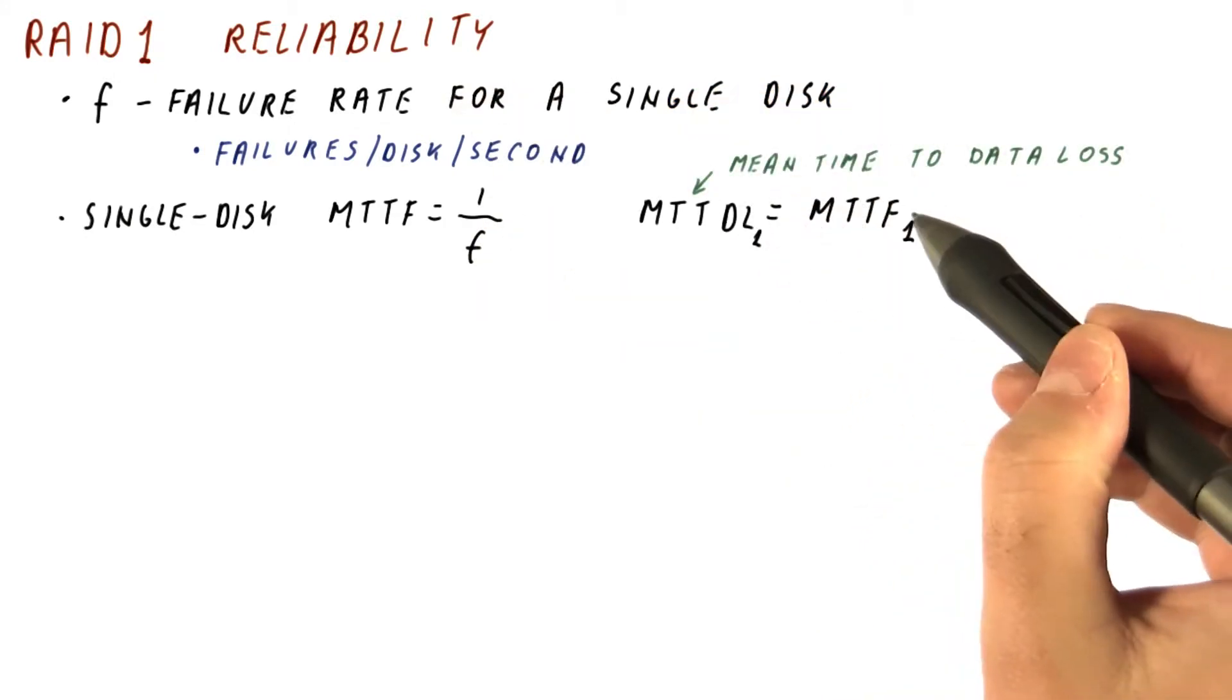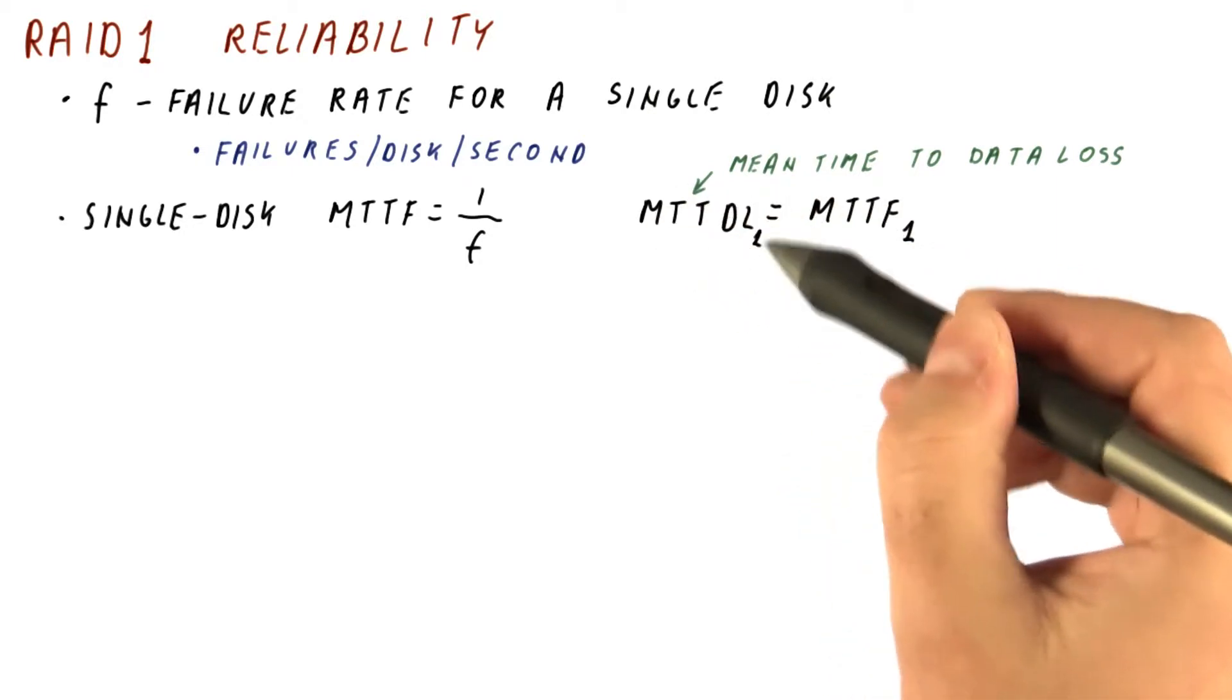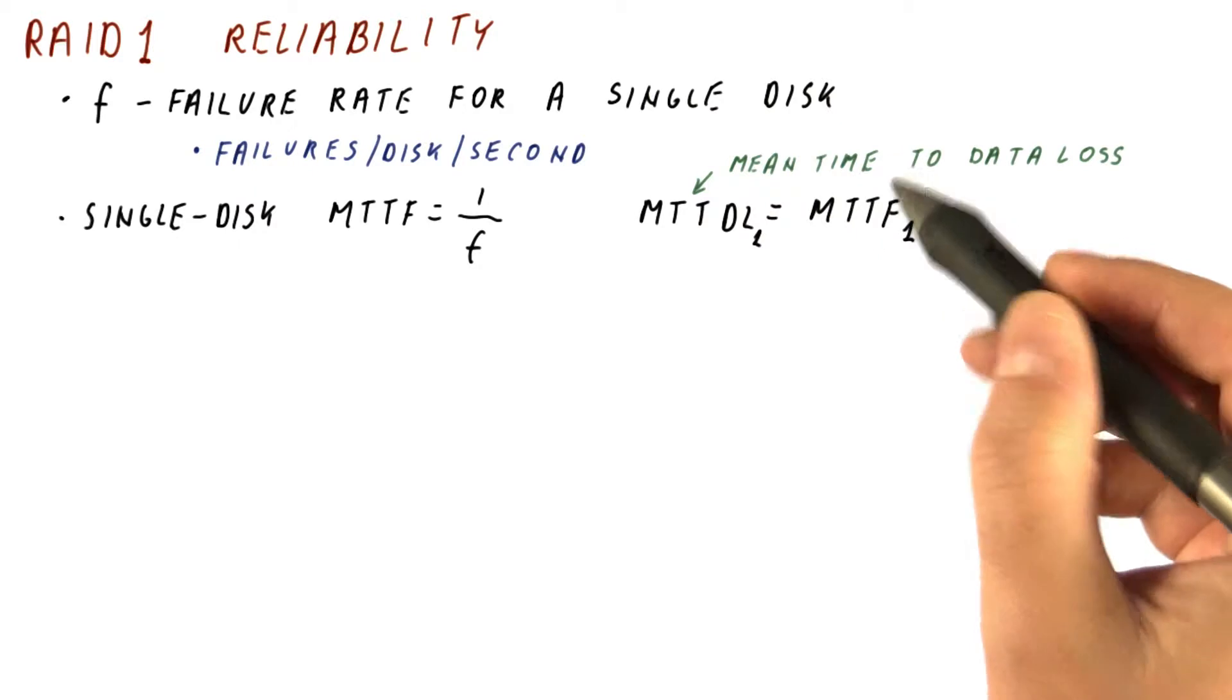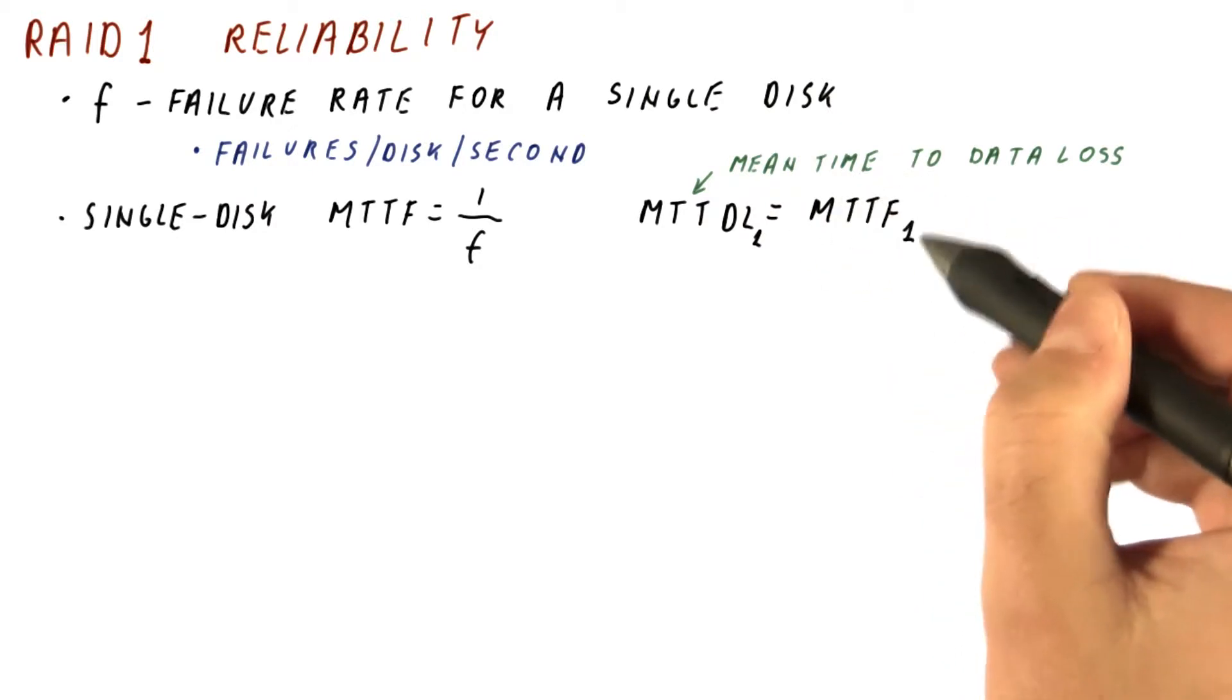And then the mean time to data loss, which is the MTTF really of the whole disk array, in this case just one disk, would be simply the MTTF of that one disk.